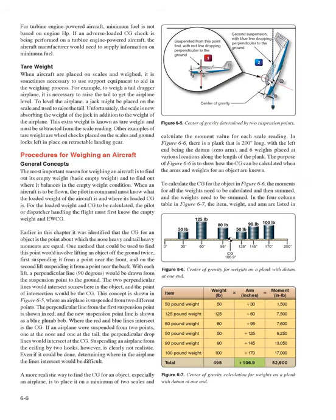For turbine engine powered aircraft, minimum fuel is not based on engine HP; the aircraft manufacturer would need to supply minimum fuel information for an adverse loaded CG check. Tare Weight: When aircraft are placed on scales, support equipment used to aid in weighing adds extra weight. For example, a jack placed on a scale to raise the tail of a tail-dragger airplane adds weight known as tare weight, which must be subtracted from the scale reading. Other examples of tare weight include wheel chocks placed on scales and ground locks left in place on retractable landing gear.